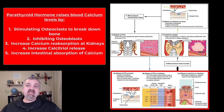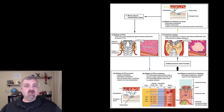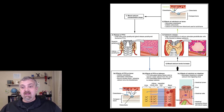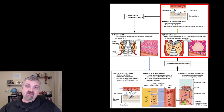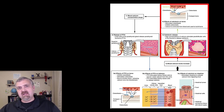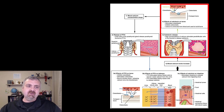Whereas calcitonin decreases absorption at the kidneys. So all of this causes your blood calcium levels to come back up. But if they get too high, then the opposite is going to happen — calcitonin gets involved. It's going to decrease absorption of calcium at the gut, increase urinary excretion of calcium, activate your osteoblasts — the bone builders — and turn off your osteoclasts, the bone breakers. The balance between the two should leave you with good blood calcium levels.